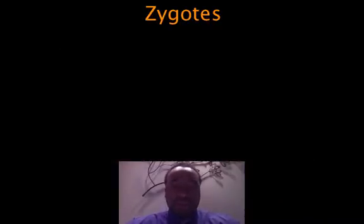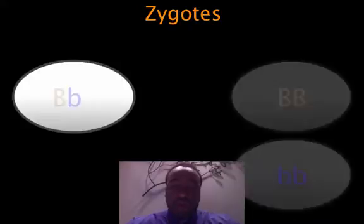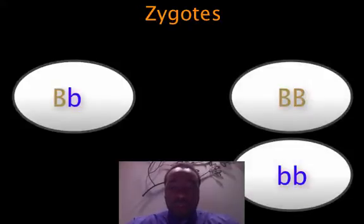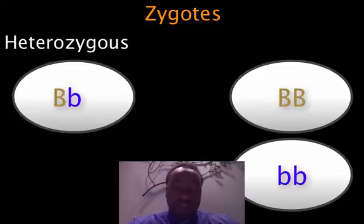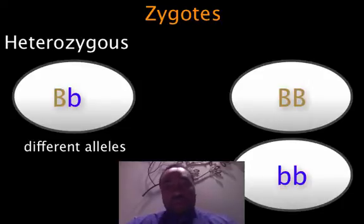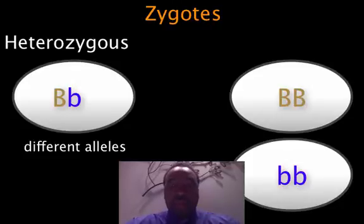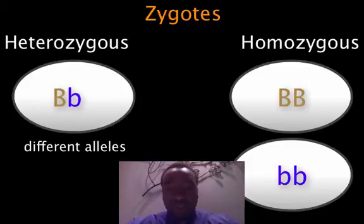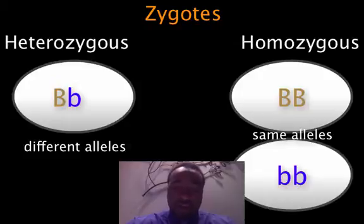So what does this mean? There are three possible zygotes. One zygote might be big B, little b. That zygote has two different alleles and is called heterozygous. Hetero means different, as in heterosexuals are attracted to a different sex, and zygous of course refers to zygote. Those with either big B, big B or little b, little b are known as homozygous because they have the same alleles — similarly, homosexual means attracted to the same sex.